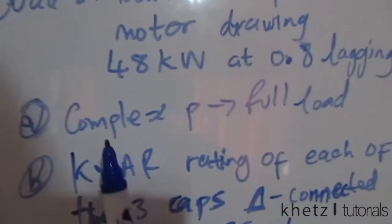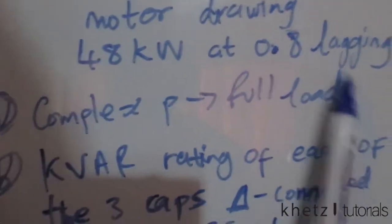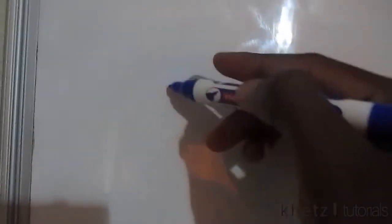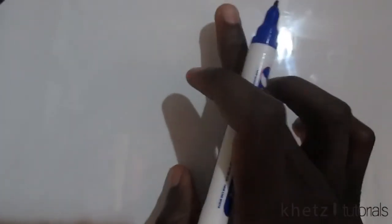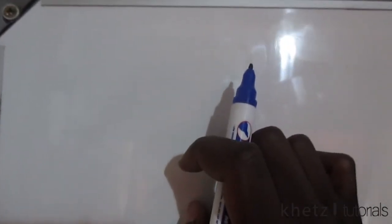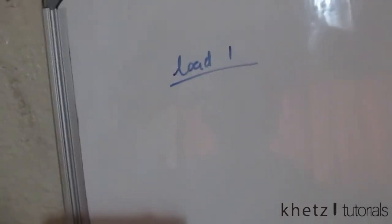The first question asks for the complex power absorbed by the full load. We'll break this down into load one and load two, and the total complex power for the full load will be the addition of those two.